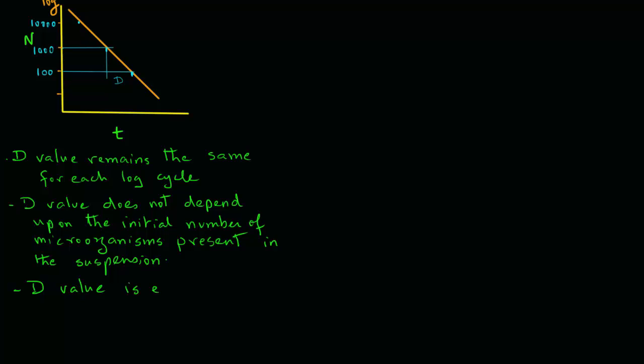Note that D value is expressed in time units, most often as minutes. And again, it is a ninety percent reduction in the existing microbial population.